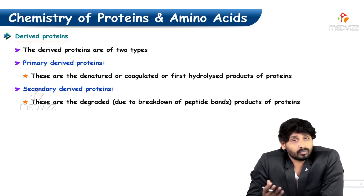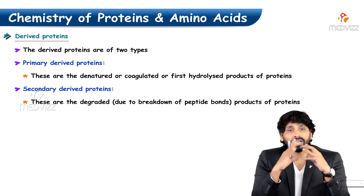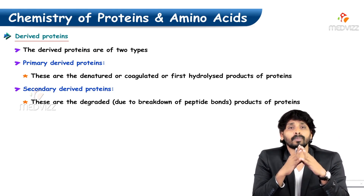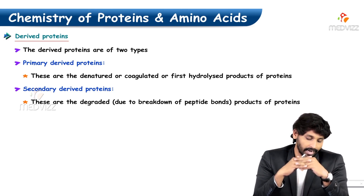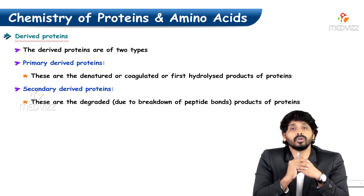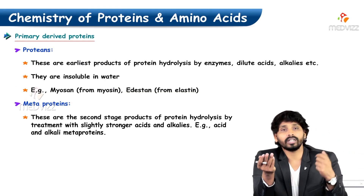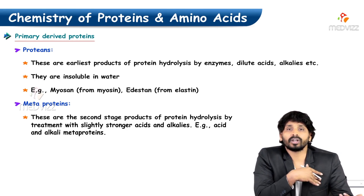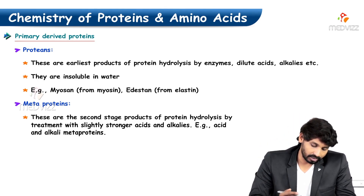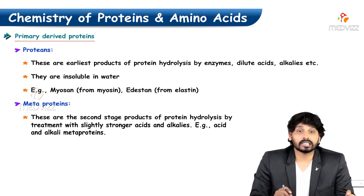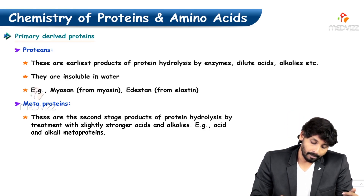Derived proteins are of two types: primary and secondary. Primary derived proteins are formed when protein undergoes denaturation — they are denatured, coagulated, or first hydrolyzed products of proteins. Metaproteins are the earliest products of protein hydrolysis by enzymes, alkalis, or acids — examples include myosin from myosin and elastin derivatives. Metaproteins are second-stage products of protein hydrolysis by treatment with stronger acids or alkalis.